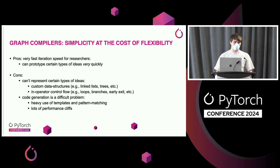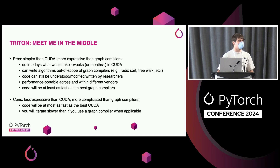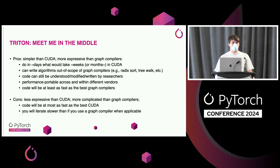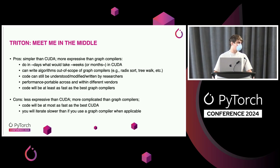Generally, code generation is a difficult problem. Sometimes even when ideas can be represented, the generated code is not as fast as hand-tuned kernels with custom operators. Triton is a way to do something in between — simpler than CUDA yet more expressive than graph compilers. In a few days you'll be able to do what would take weeks or months in CUDA, and write algorithms out of scope for graph compilers, like radix sorting or working with a tree. The code will still be legible so researchers can read, understand, and modify it.